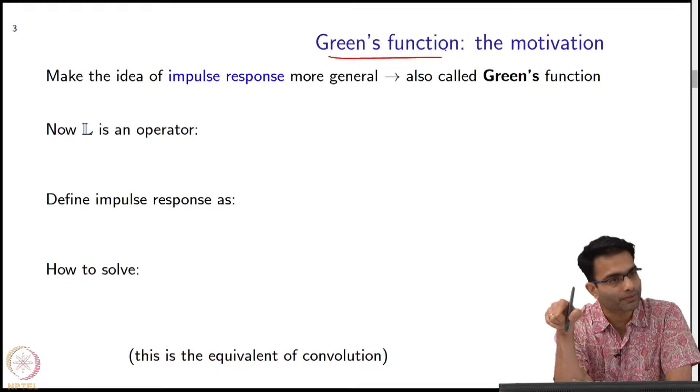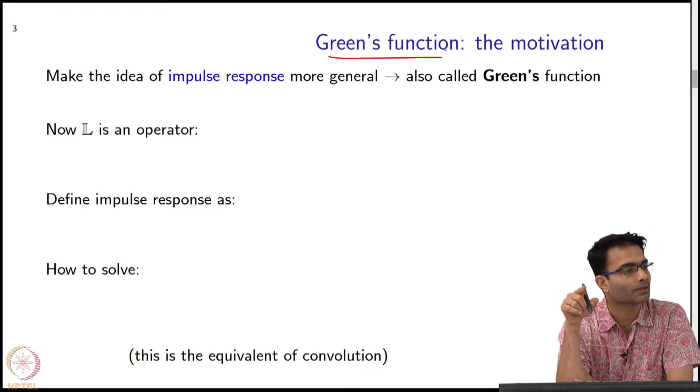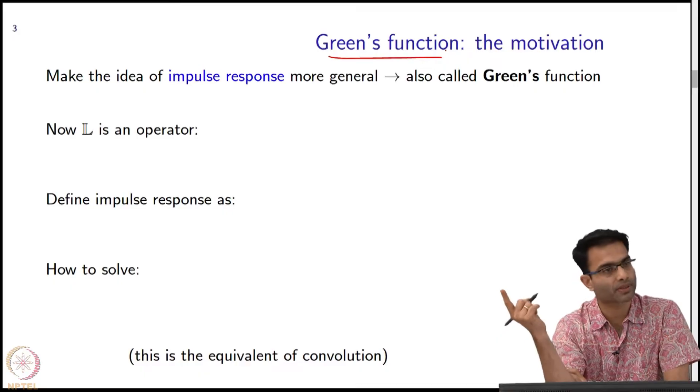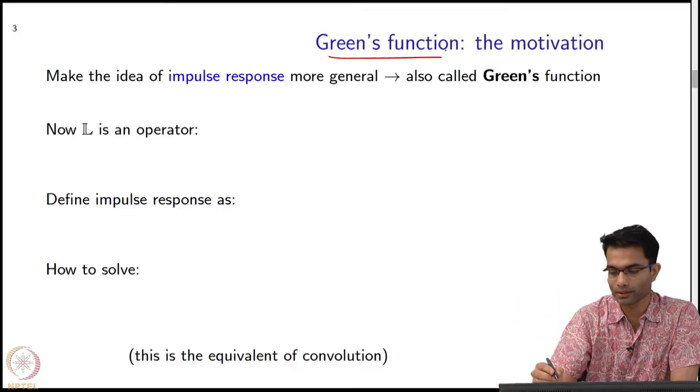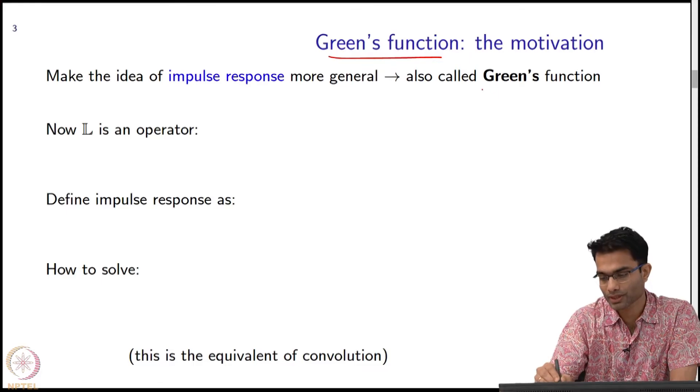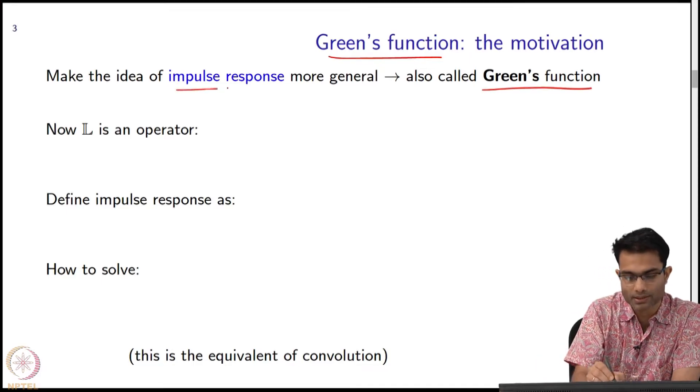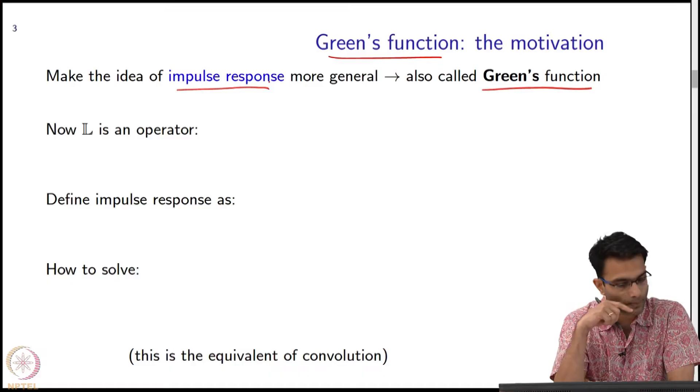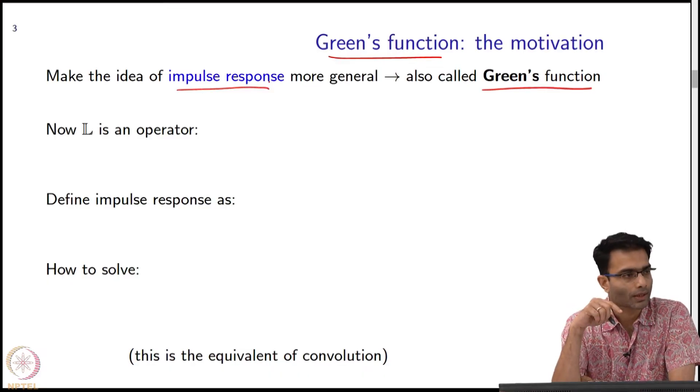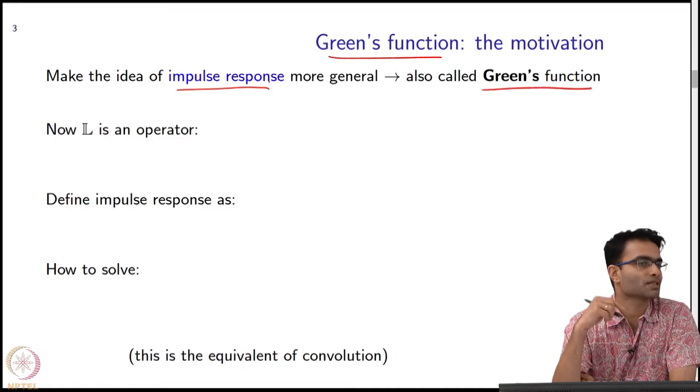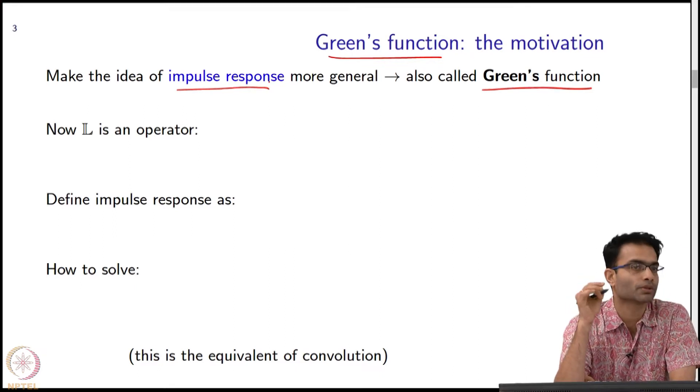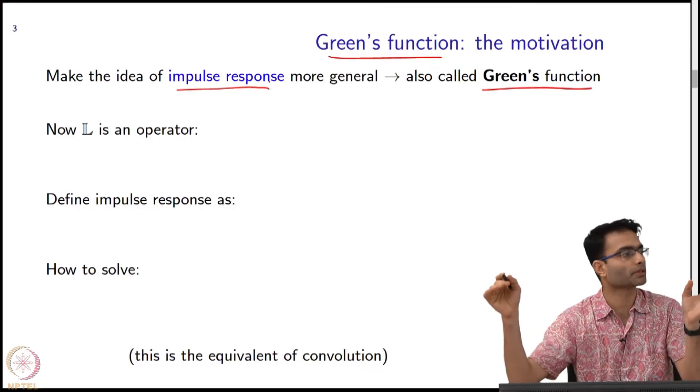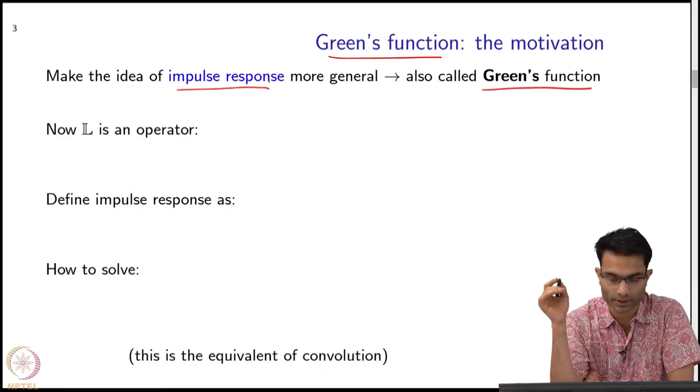Same idea is being called by a different name—it is called Green's function, same exactly the same concept. In signals, I worked in time and frequency. Now I will work in space and spatial frequency. That is the only slight difference. This Green's function is the same as an impulse response. There is nothing different. What will get generalized is in space I can talk of one dimension, two dimension, multiple dimensions. It will be an impulse response corresponding to so many dimensions.